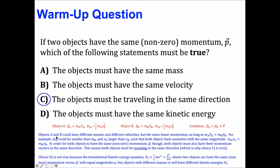Object A could have a smaller mass than object B, and likewise a larger speed than object B. In that case, both objects could have the exact same magnitude of linear momentum — mass times speed is equal for both. But since linear momentum is a vector quantity with both magnitude and direction, for the linear momentum vectors to be equal, the directions must also match. So in order for the above statement to be true, both objects must be traveling in the same direction. That's why choice C is true.